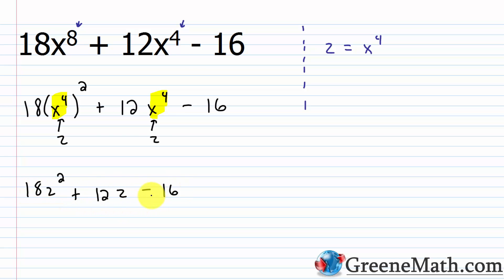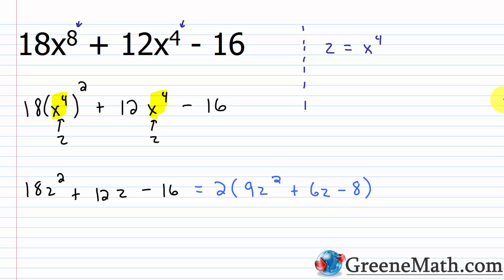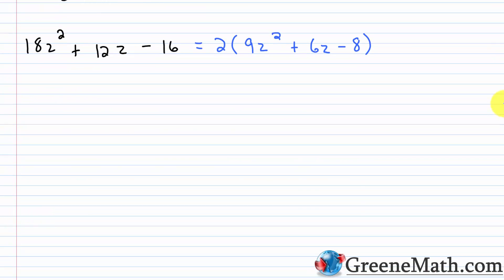Let's think about factoring this. The first thing you notice is that everything is divisible by 2, so I can pull that out to get 2 times (9z squared plus 6z minus 8). Now if I want to factor the expression inside the parentheses, I can use reverse FOIL or factoring by grouping. I'm going to use factoring by grouping.